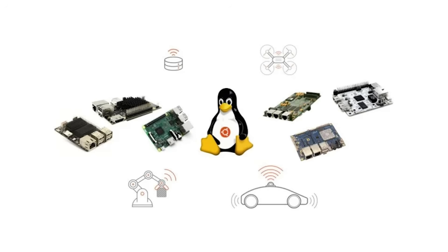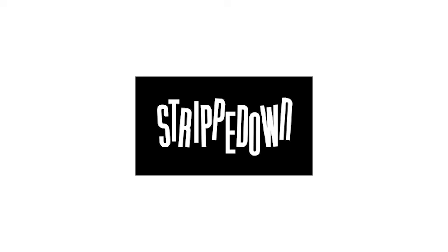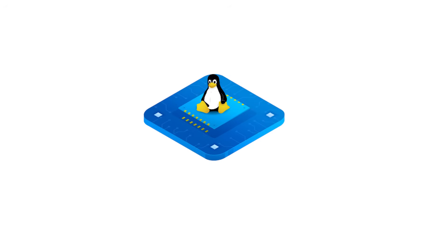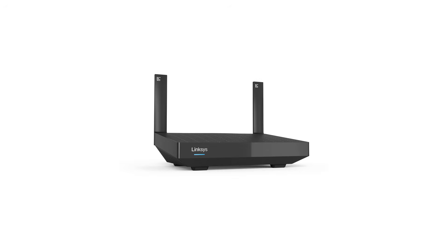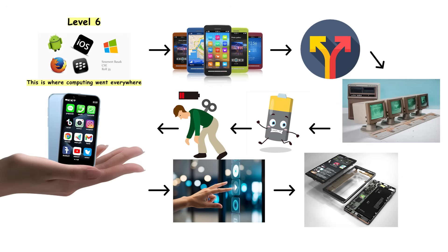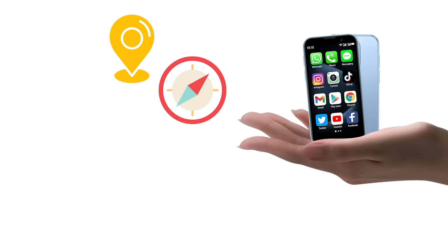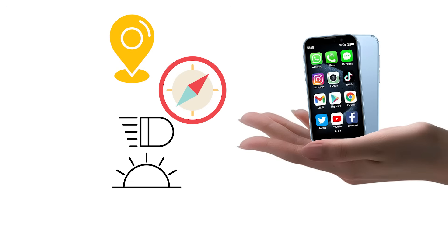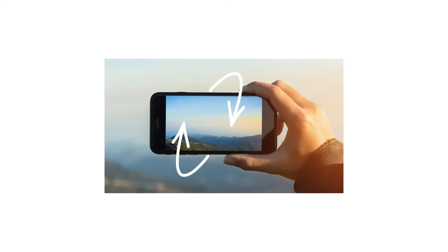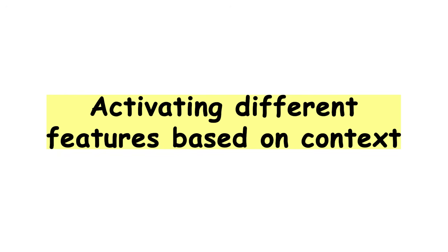Embedded Linux variants run on billions of devices — stripped down, optimized for specific hardware, and designed to run for years without rebooting. Your Wi-Fi router, smart TV, and home security system probably run embedded Linux. Level 6 systems introduced context awareness: your phone knows your location, orientation, ambient light level, and motion. The OS adapts accordingly — rotating the screen, dimming the display, or activating different features based on context.